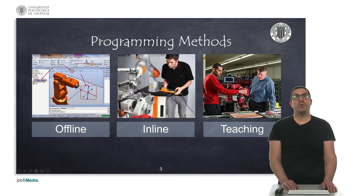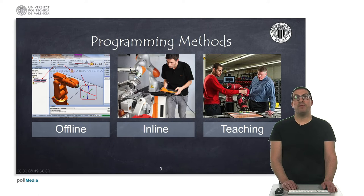Here I show some robot programming methods. Offline programming is carried out by computer software, in which all robot movements to be performed on a specific task are previously computed. Once the program is verified using simulation tools, it is transferred to the robot controller to run it. On the other hand, in inline programming, an engineer manually moves the robot using the robot controller and records the positions of interest, and configures the corresponding motion instructions to achieve the required task.